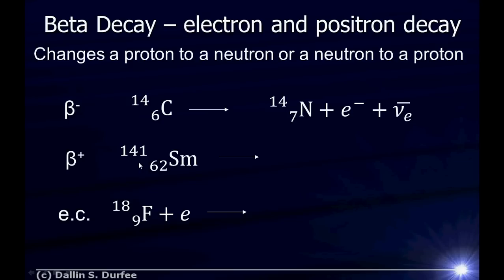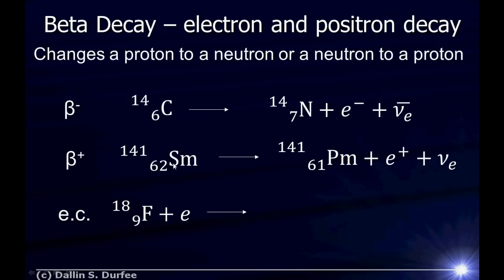Beta plus decay is the same thing except we're going to spit out a positron — an anti-electron. A positron has positive charge, so if we kick out positive charge, we're getting rid of the positive charge of one of our protons — we're turning one of our protons into a neutron. The number of nucleons stays the same, but we're changing a proton to a neutron, so our atomic number goes down by one, from 62 to 61. We kick out a positron, which has anti-electronness, so we have to cancel that out by kicking out an electron neutrino, not an anti-neutrino.